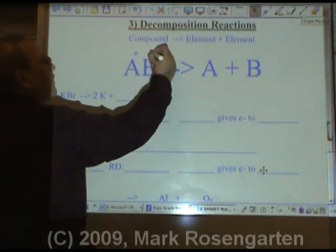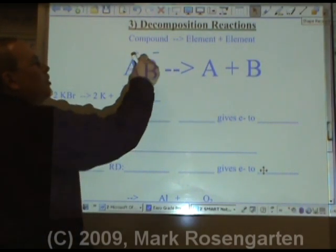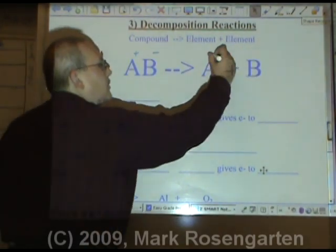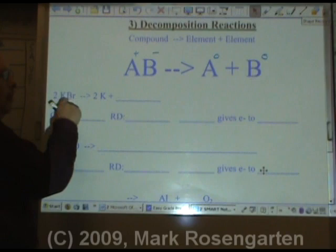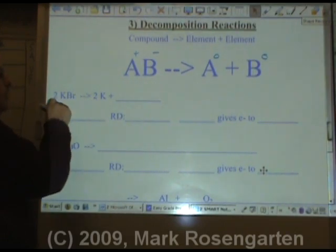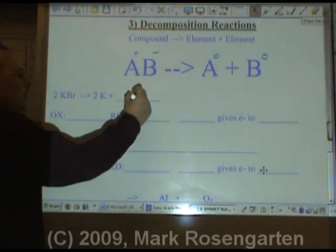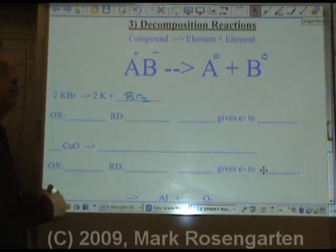In the compound, it's connected by charged ions. When the elements are separated, they have no charge. 2KBr forms 2K plus. There's two Br's. There's no coefficient. Br2, Brinkelhoff. Bromine is diatomic when it's by itself.